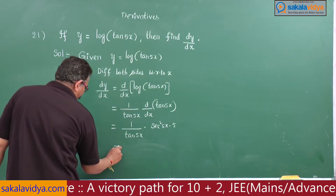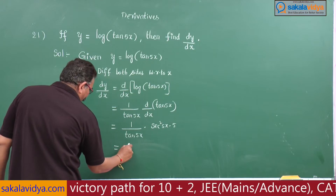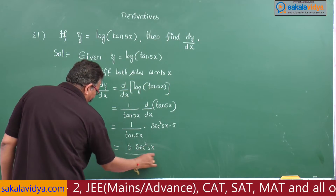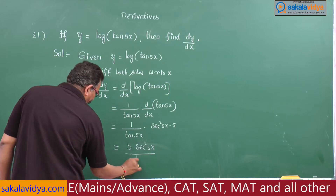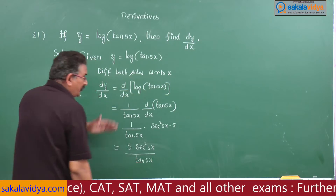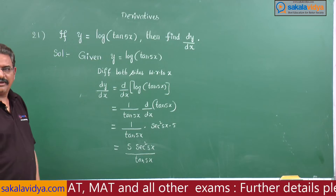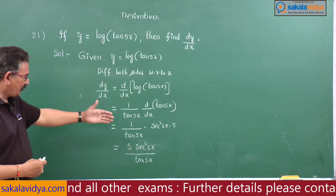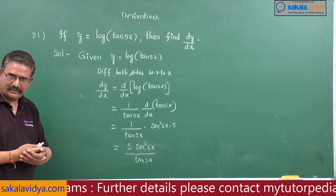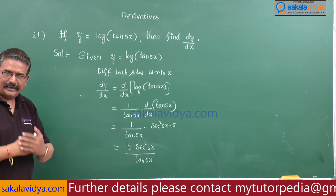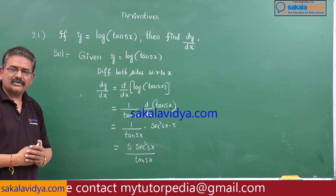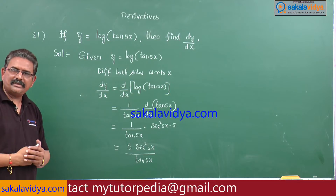This can be written as 5 sec² 5x by tan 5x. If you want, you can further simplify by writing sec 5x and tan 5x in terms of cos, so that it can be simplified.